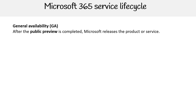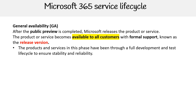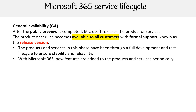Moving on to general availability. So after the public preview is completed, Microsoft releases the product or service. The product or service now becomes available to all customers with formal support, known as the release version. The products and services in this phase have been through a full development and test lifecycle to ensure stability and reliability. And with Microsoft 365, new features are added to the products and services periodically.